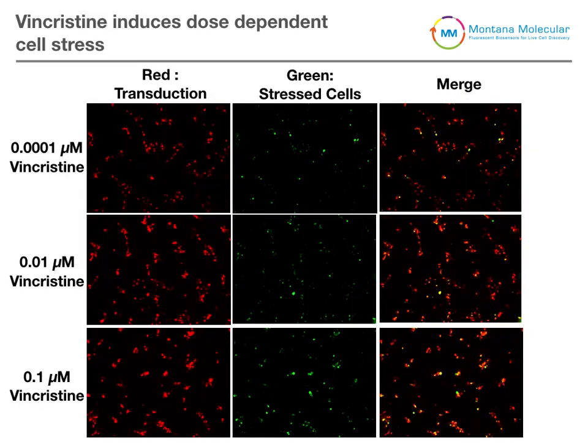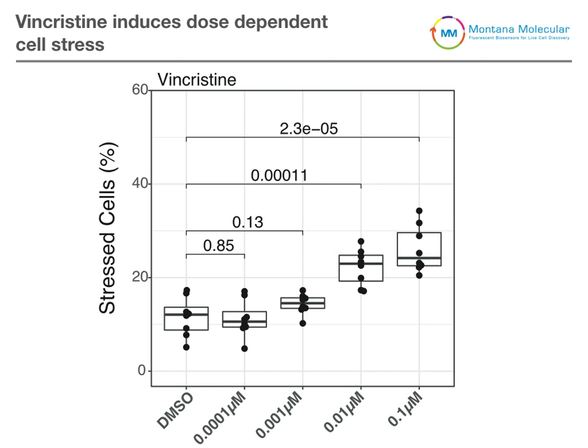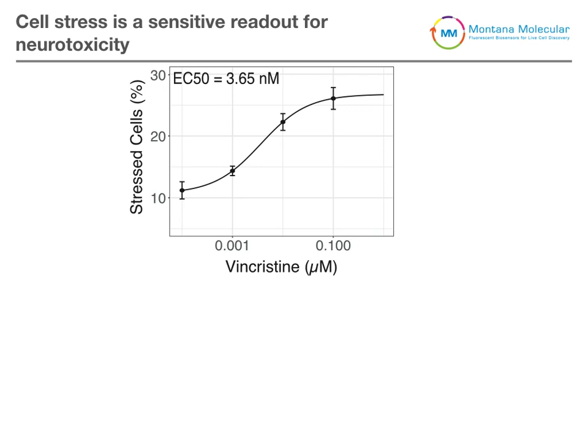Upon increasing concentrations of these different chemotherapeutics — in this case vincristine — you see that there's also an increase in the number of green cells within these populations. We can use this percentage of green or stressed cells to quantify the level of cellular stress. Examining the percentage of stressed cells as a function of increasing concentration of vincristine, we see a nice dose-dependent response, and we can calculate an EC50 of about 3.65 nanomolar.